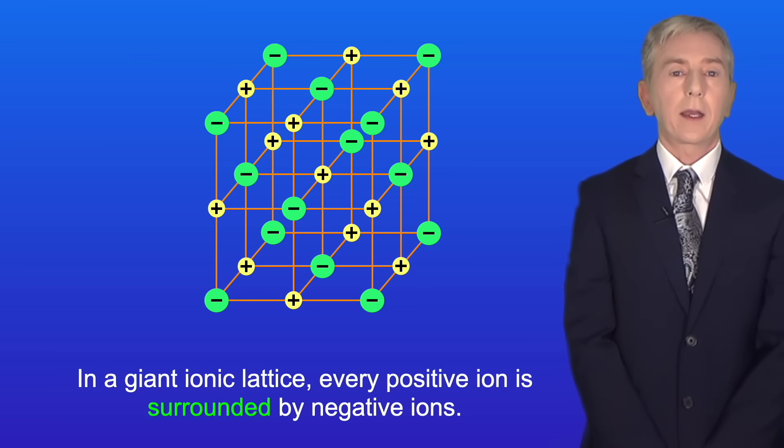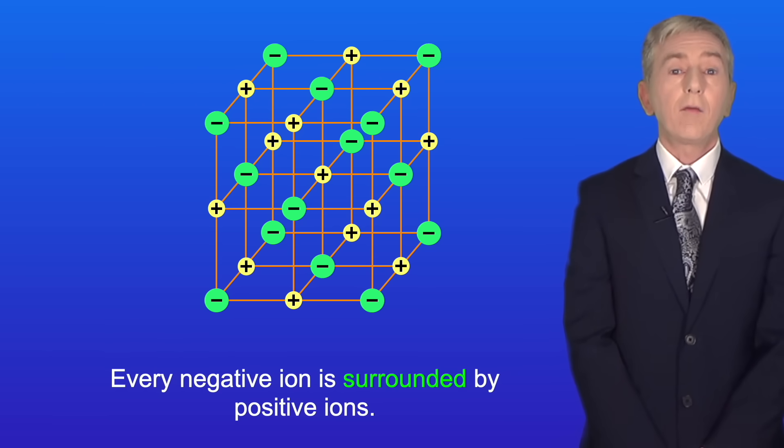In a giant ionic lattice, every positive ion is surrounded by negative ions, and every negative ion is surrounded by positive ions.